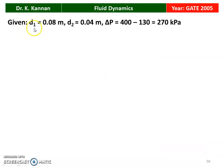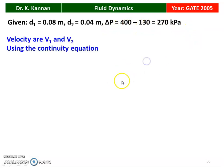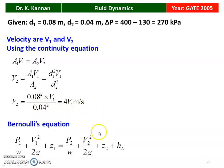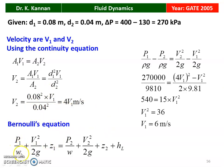Pipe diameter is 0.08 m, throat diameter is 0.04 m, ΔP = 400 − 130 = 270 kilo Pascal. Using the continuity equation A₁V₁ = A₂V₂, so V₂ = (D₁²/D₂²)V₁. Substituting: (0.08)²/(0.04)² × V₁ = 4V₁. Applying Bernoulli's equation: P₁/(ρg) + V₁²/(2g) + Z₁ = P₂/(ρg) + V₂²/(2g) + Z₂ + H_L. There are no losses, so H_L = 0, and the venturimeter is horizontal so Z₁ = Z₂.